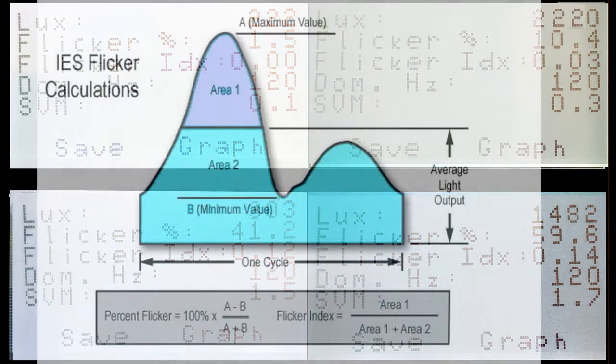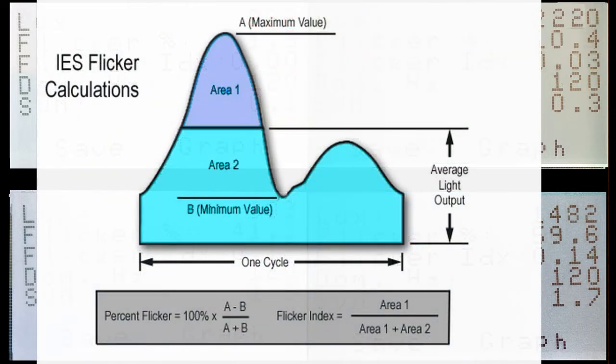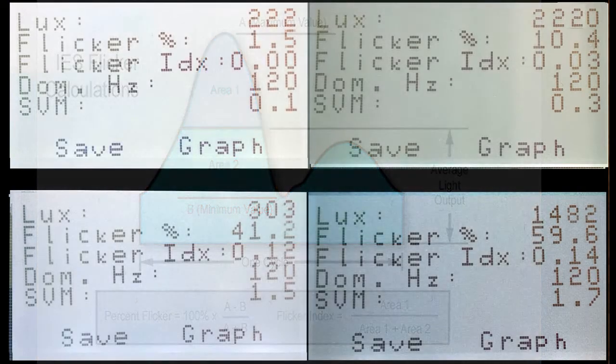Percent flicker is a simple measurement of the maximum light versus the minimum light in a cycle with a scale of 0 to 100% and lower numbers being less problematic.